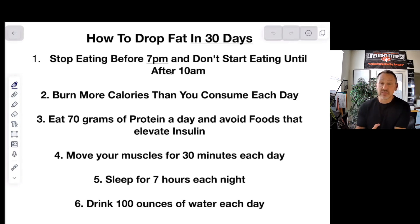Is this the most effective way for you? No, everyone has a more effective way. If insulin is too high, it's going to be hard to turn the fat burning machinery back on. Avoid insulin elevating foods. Move your muscles for 30 minutes a day. Sleep for seven hours each night and drink 100 ounces of water each day.